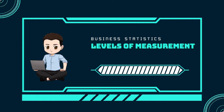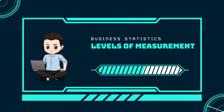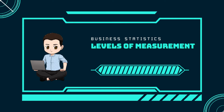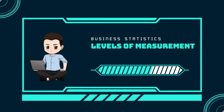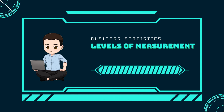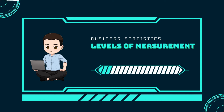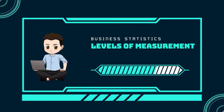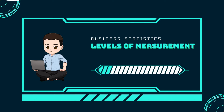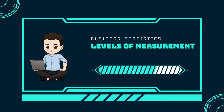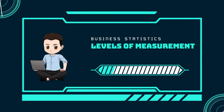Interval level data can be used in calculations, but one type of comparison cannot be done — there is no meaning to the ratio of 80 to 20, or 4 to 1. Data measured using the ratio scale takes care of the ratio problem and gives you the most information. The ratio scale data is like interval scale data, but it has a zero point and ratios can be calculated.